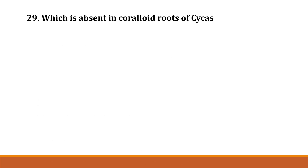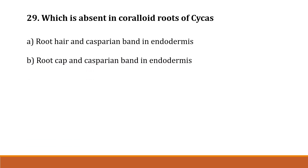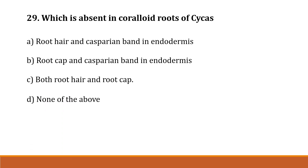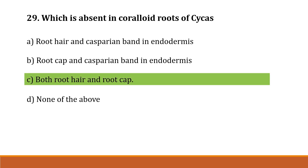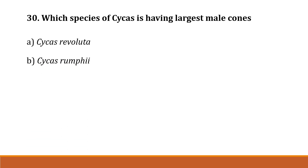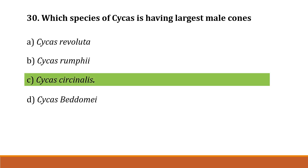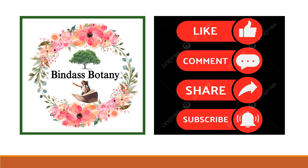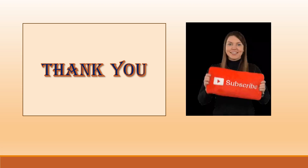Question number 29: Which is absent in coraloid roots of Cycas? Option A: root hair and Casparian band in endodermis, Option B: root cap and Casparian band in endodermis, Option C: both root hair and root cap, Option D: none of the above. The correct answer is Option C — both root hair and root cap are absent in coraloid roots of Cycas. Question number 30: Which species of Cycas has the largest male cone? Option A: Cycas revoluta, Option B: Cycas rumphii, Option C: Cycas rumphii, Option D: Cycas rumphii. The correct answer is Option C, Cycas rumphii. Thank you.